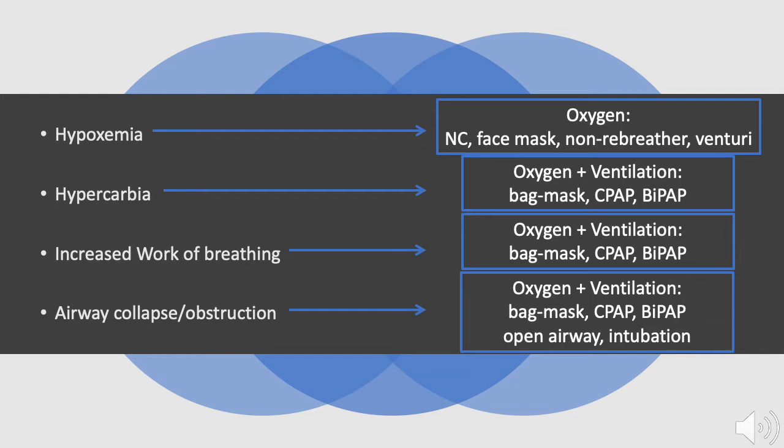If the patient is hypercarbic, the cause is usually hypoventilation or apnea. These patients can be obtunded from high levels of carbon dioxide, so providers need to assist these patients with carbon dioxide elimination. This can be achieved using manual ventilation with a bag mask device or by applying non-invasive ventilation support such as CPAP or BiPAP.